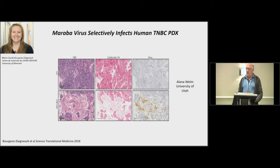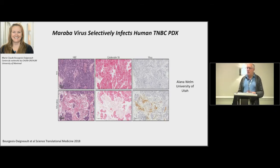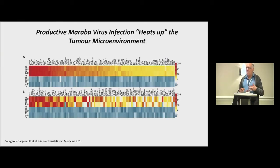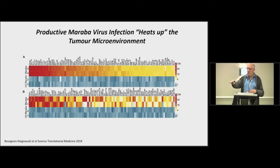Using PDX models from Elena Whelm at the University of Utah: on top you can see robust tumor growth with no virus treatment, but after intravenous treatment with Maraba the tumor becomes disrupted, the virus continues to spread, and there's a therapeutic outcome. So some triple negative breast cancers are inherently susceptible to virus infection. Mary-Claude then asked: does the tumor change when infection occurs? What we see is a change in the tumor microenvironment — you go from a very cold tumor. When using UV-inactivated Maraba that can't replicate, the tumor stays blue and very cold with few immune-responsive genes. But after infection with replicating Maraba, that tumor warms up and expresses many immune-responsive genes, which is really a good thing.